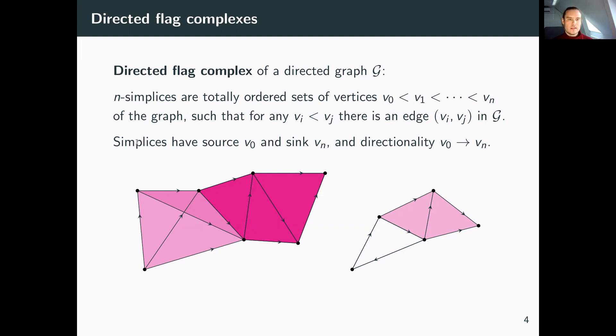This way, simplices have a source v0, the first vertex, and sink vn, the last vertex. If I take any ordered pair where the first element is v0, that pair corresponds to a directed edge starting from v0. Similarly, any ordered pair where the second element is vn corresponds to a directed edge ending at vn.